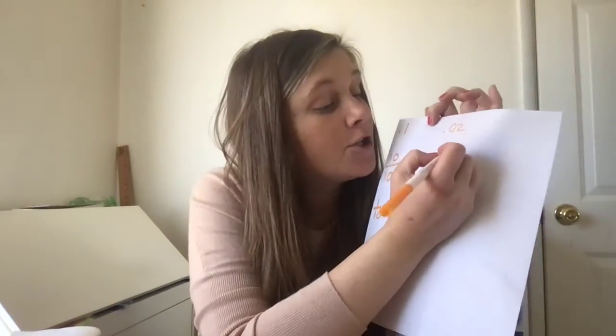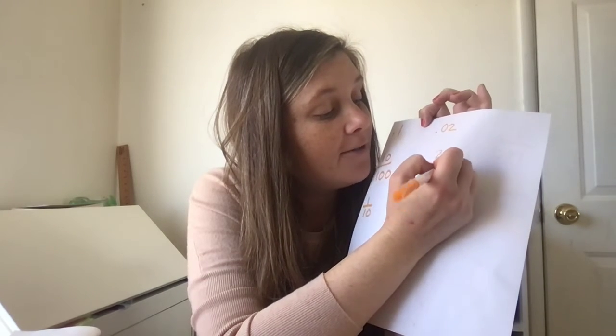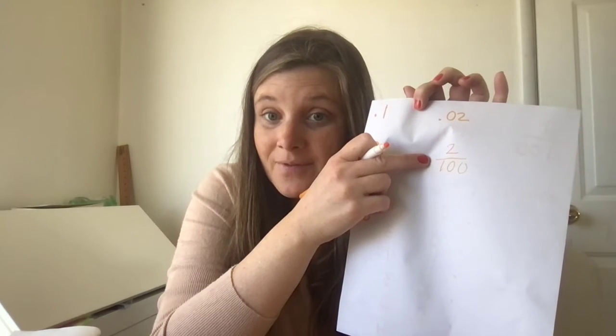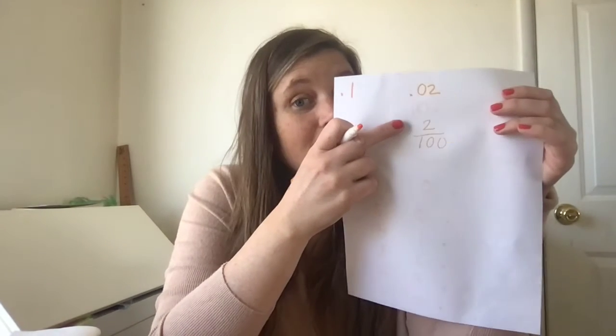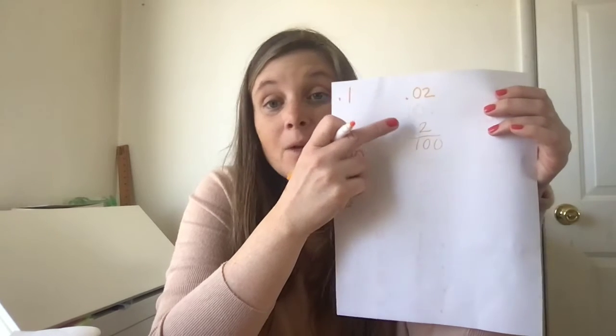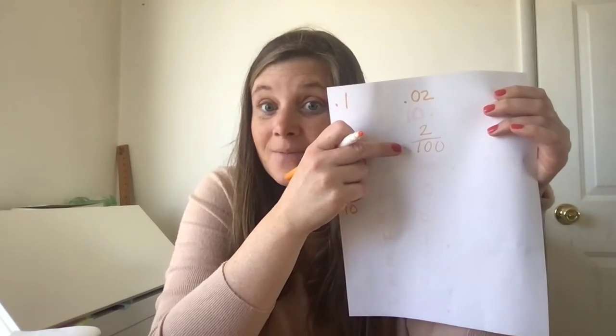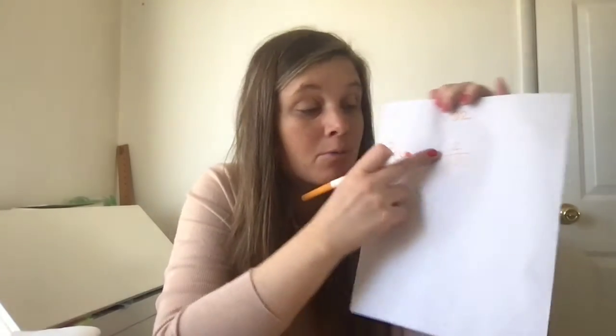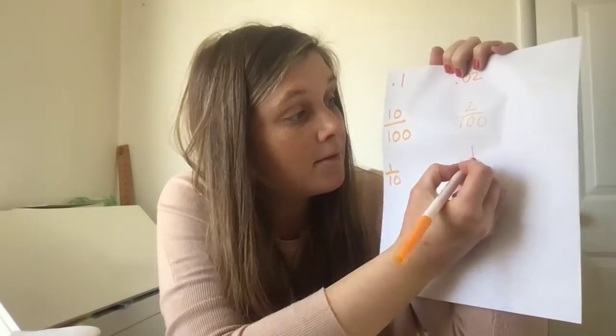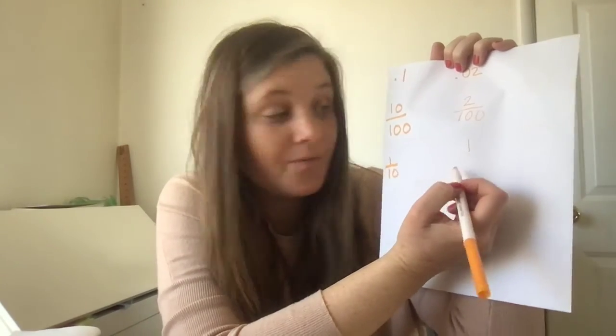On your next index card, write 0.02. What is that as a fraction? Two over 100, right. So write that on an index card. Can we make this smaller? Is there something we can divide both of these numbers by? Two, right. So what's two divided by two? One. What's 100 divided by two? Fifty.